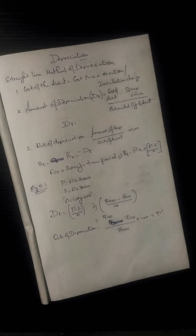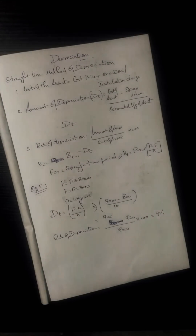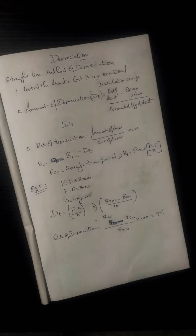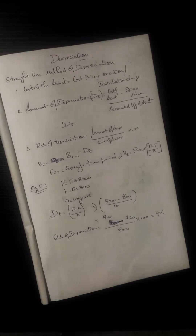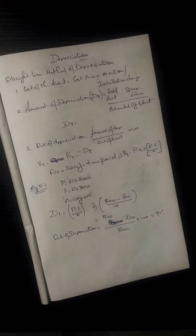Let's talk about wear and tear — the machine loses value through use. Next, depletion is also a cause of decrease in the value of an asset. Then there is obsolescence — when a newer, faster, and more efficient machine becomes available, the older machine loses value by comparison.